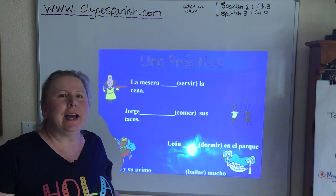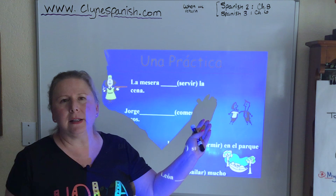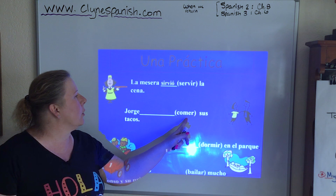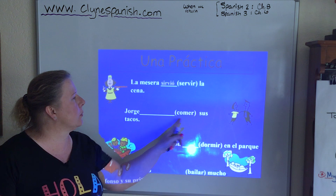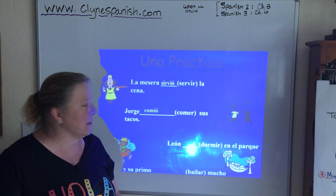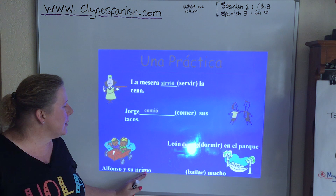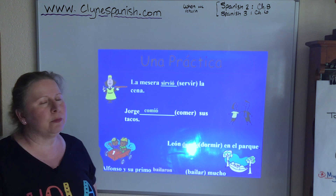Okay clase, let's go ahead and practice those irregulars. La mesera — the waitress — served the dinner: SIRVIÓ. This is one of those four — the last part of the chart that's irregular. Jorge comió sus tacos — he ate his tacos. COMER is a regular verb, so Jorge COMIÓ. León durmió — he took a nap in the park. That's one of those stem changers. And Alfonso y su primo — BAILAR is a regular AR verb — bailaron mucho.